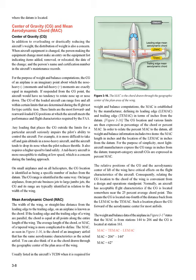The CG location and various limits are then expressed in percentage of the cord, or percent MAC (figure 3-16). In order to relate the percent MAC to the datum, all weight and balance information includes two items: the MAC length in inches and the location of the LEMAC in inches from the datum. Most light aircraft manufacturers express the CG range in inches from the datum, while transport category aircraft CGs are expressed in percent MAC. The relative positions of the CG and the aerodynamic center of lift of the wing have critical effects on the flight characteristics of the aircraft. Consequently, relating the CG location to the cord of the wing is convenient from a design and operations standpoint. Normally, an aircraft has acceptable flight characteristics if the CG is located somewhere near the 25% MAC point.